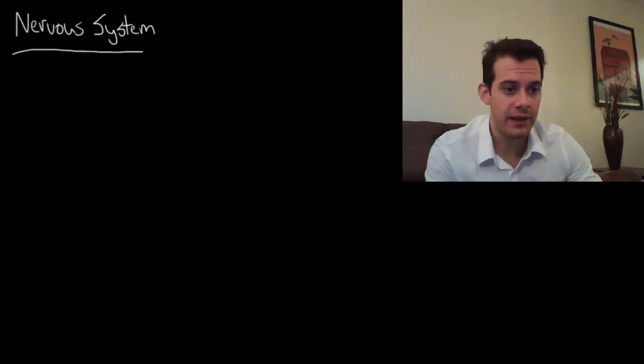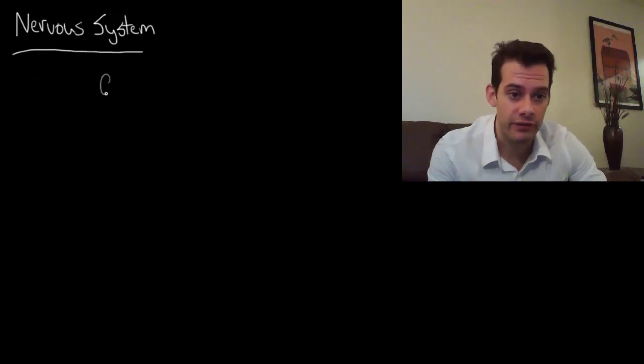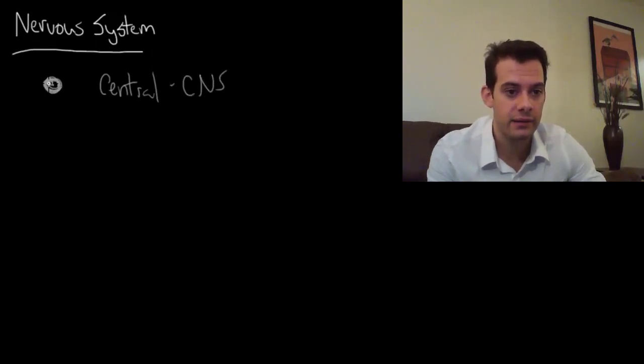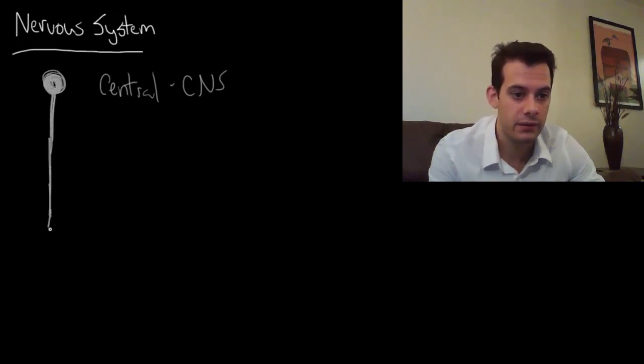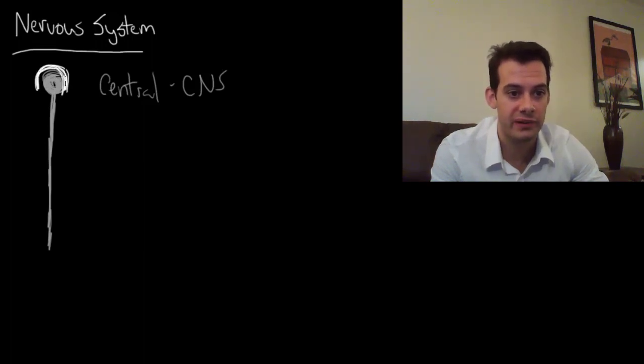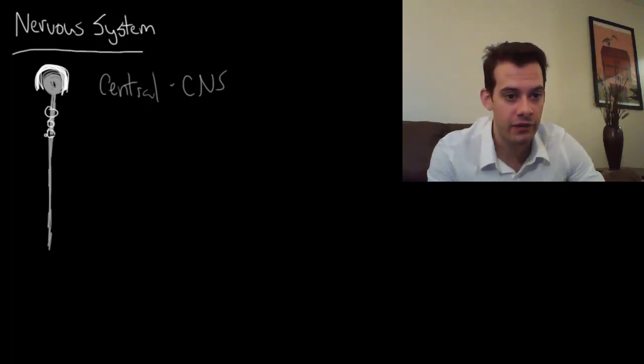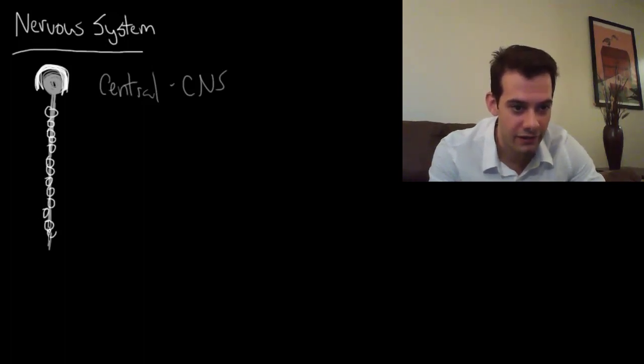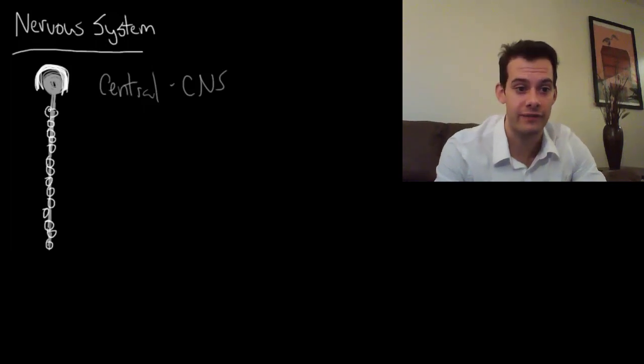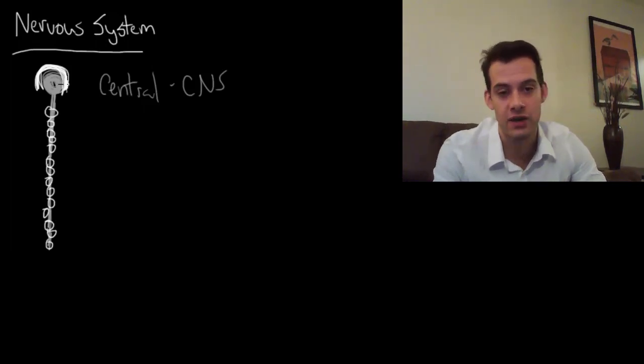We can divide the nervous system into two main parts. First we have the central nervous system or the CNS, and this includes the brain and the spinal cord. We can see the importance of these structures because they're armored—encased in bone to protect them. We have the skull around the brain and the vertebrae of the spine wrapping around the spinal cord to protect it.